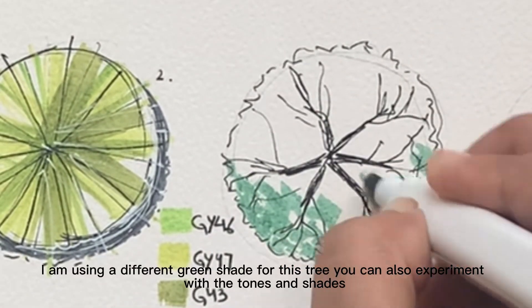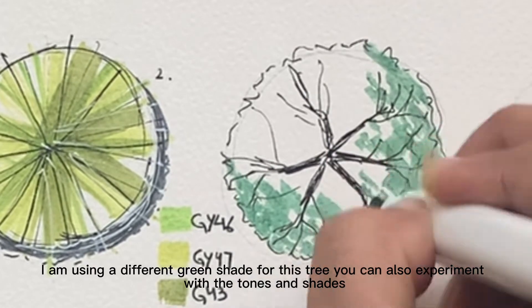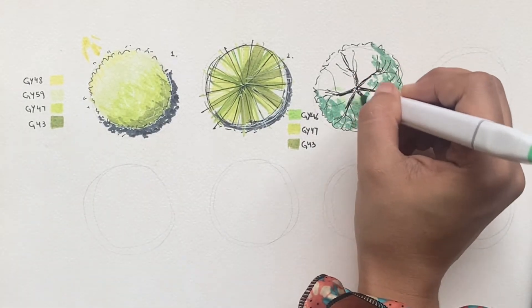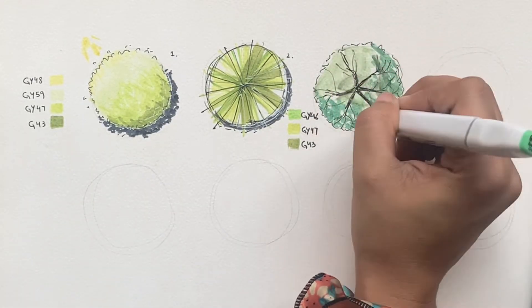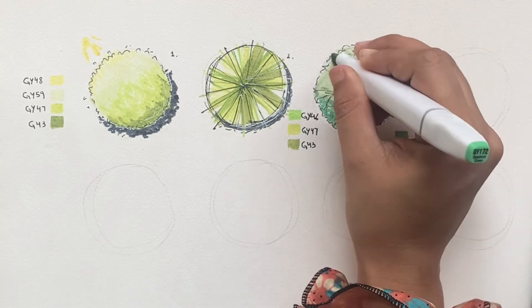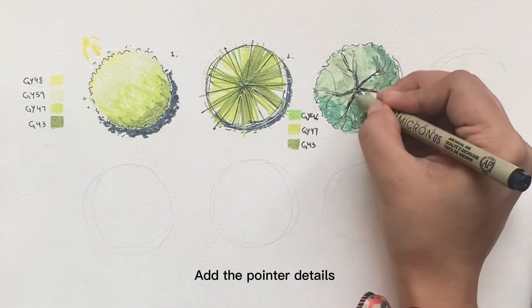I am using a different green shade for this tree. You can also experiment with the tones and shades. Add the pointer details.